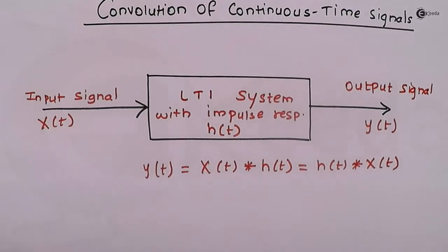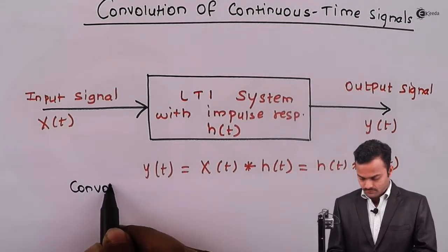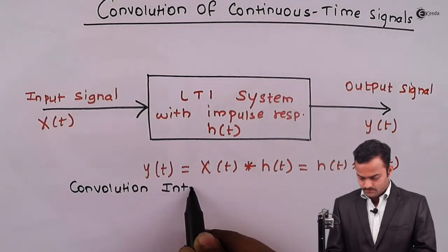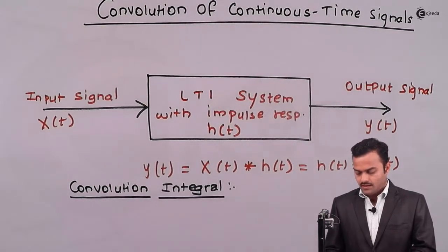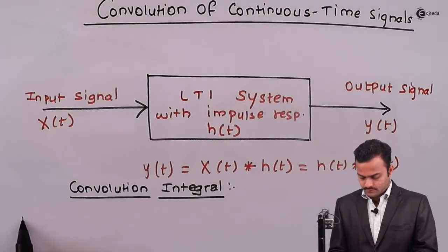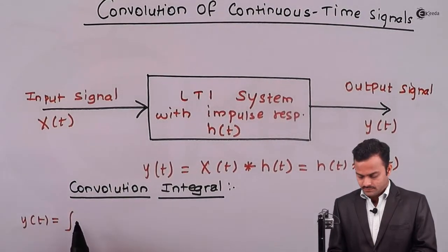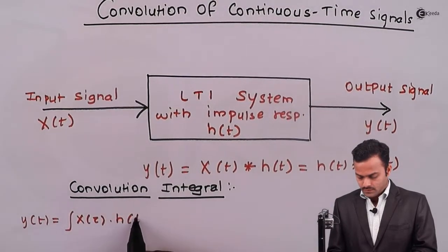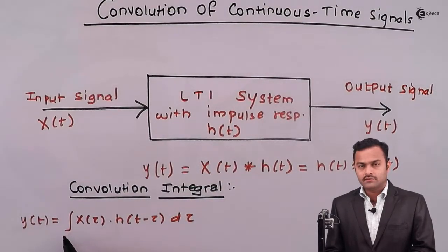So, the formula to get y(t), we call that as the convolution integral. And that convolution integral is given by y(t) equals integration, x(τ) into h(t - τ), dτ. This is the integral you have to solve with the limits.